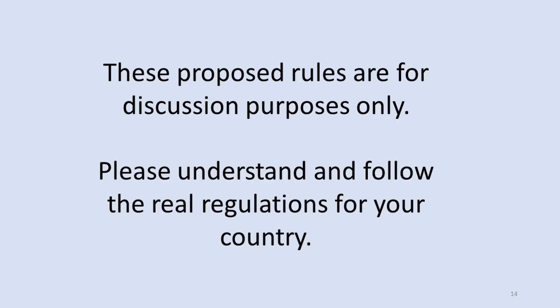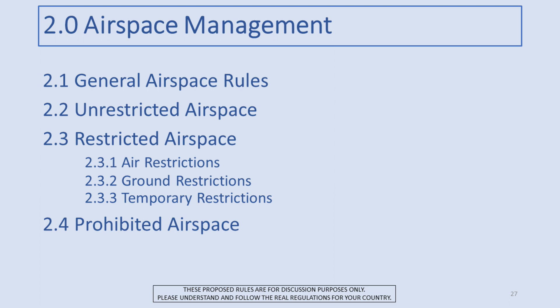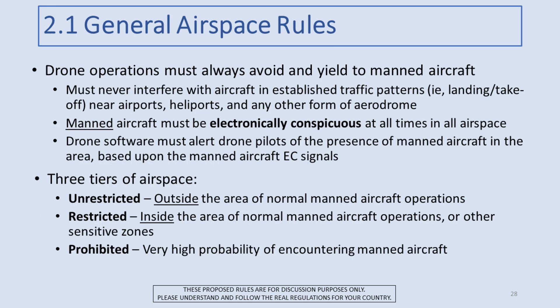A quick reminder that these proposed rules are for discussion purposes only — they're not real. Please understand and follow the real regulations for your country. Airspace management is the second of the four modules of Don's Drone Rules. In this module we'll cover some general airspace rules, and then the three types of airspace I've defined: unrestricted airspace, restricted airspace with a few different flavors, and finally prohibited airspace.